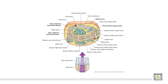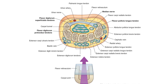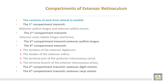These are the six compartments — first, second, third, fourth, fifth, and sixth. This is a transverse section showing the extensor retinaculum. In front there is the flexor retinaculum also. The compartments of the extensor retinaculum.